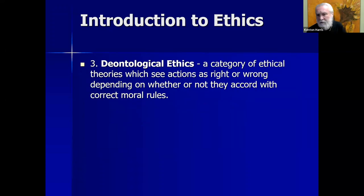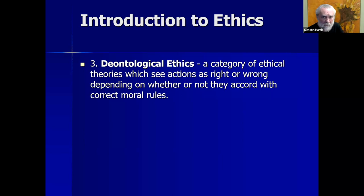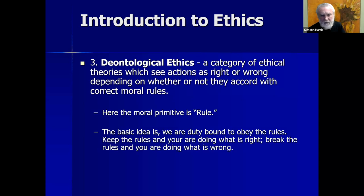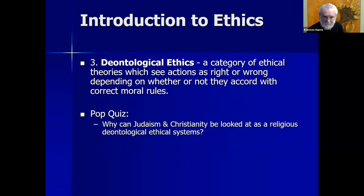The third category of ethical theories is deontological ethics — a category which sees actions as right or wrong depending on whether or not they accord with correct moral rules. The moral primitive driving these theories is the notion of the moral rule. Deontology comes from the word 'deont,' meaning duty, so it's a duty-based ethical theory. The idea is that we are duty-bound to behave in certain ways and refrain from behaving in other ways. Keep the rules and you're doing what's right; break the rules and you're doing what's wrong.